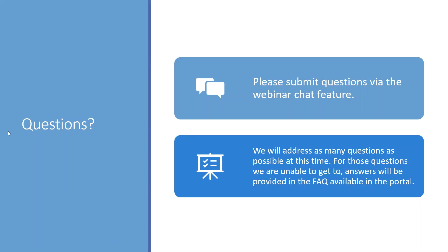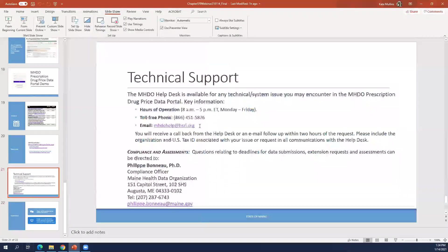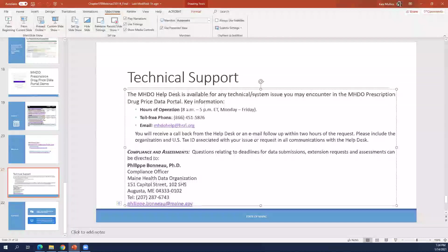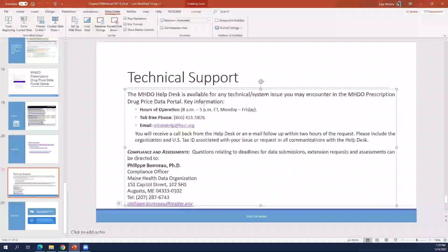Here's the help desk email again: mhdohelp@hsri.org. Also, my colleague Philippe reminds us that the automated email address we send notifications from — portal@mhdo.maine.gov — is an unmonitored address. You cannot reply to that address; all replies need to come through our help desk. We try to remind everybody about that unmonitored email address.